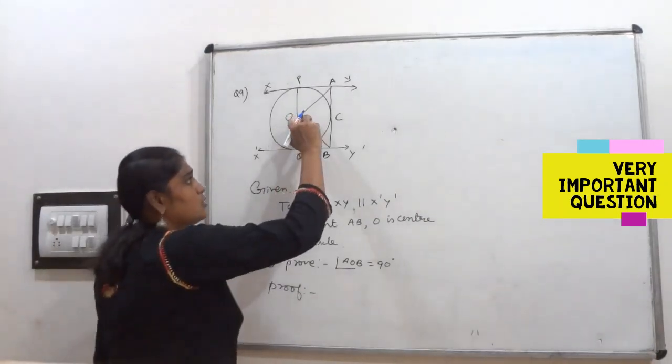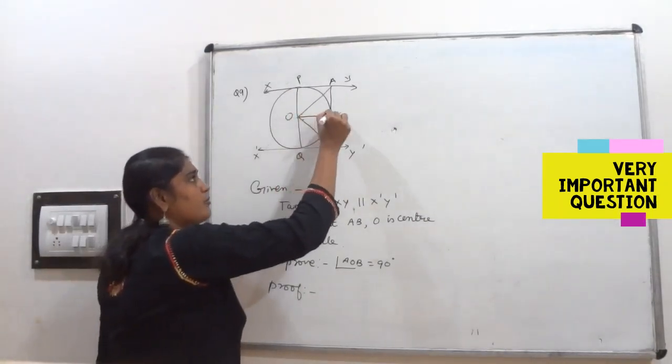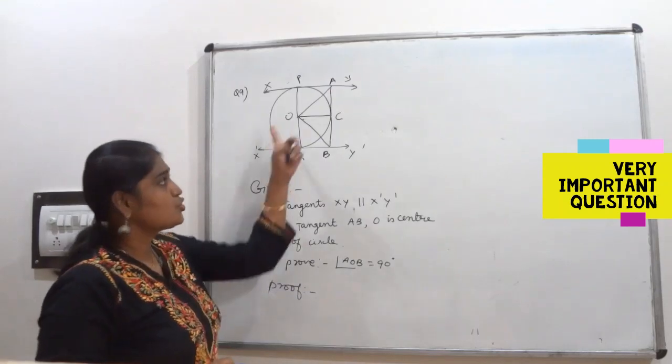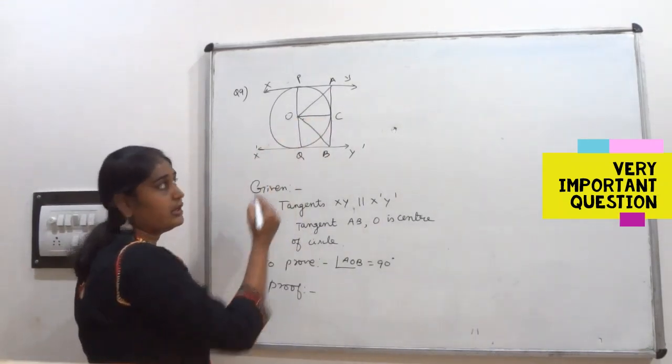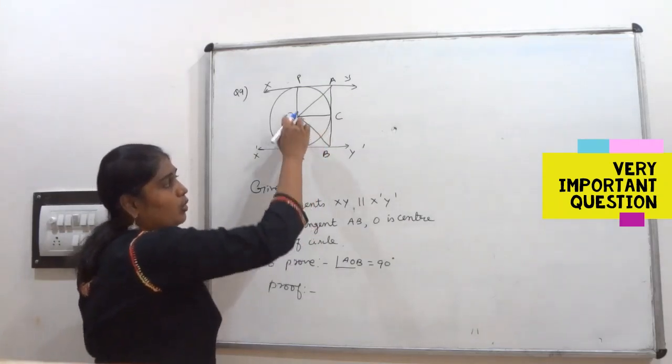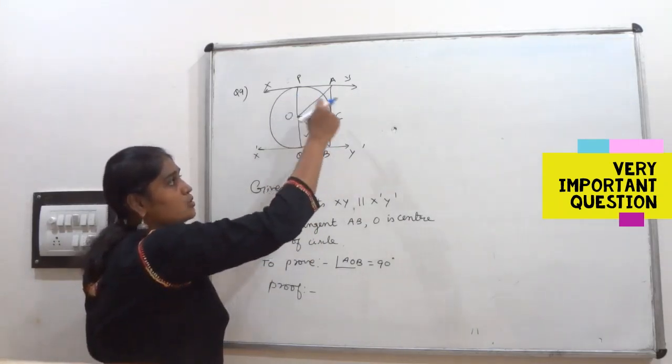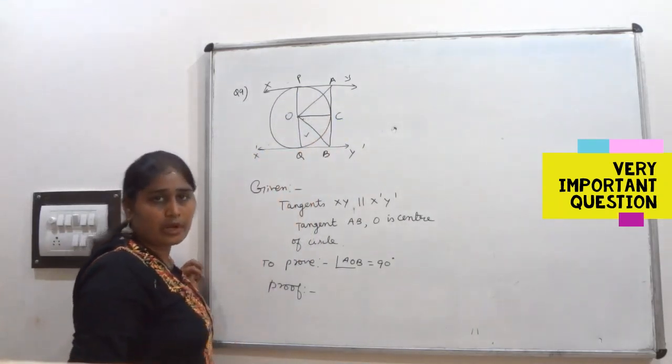So here join this OC. Do the construction. Join OC, so that I will get two triangles here. One is OQB, another one is OCB. These are the two triangles you have.